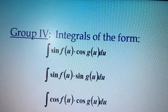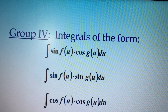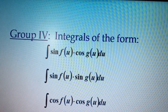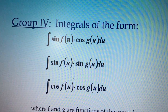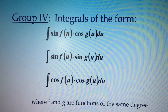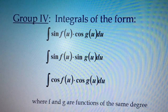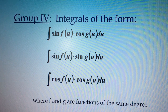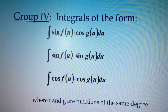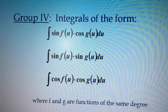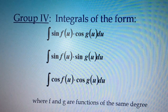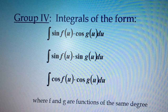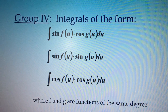So where f and g are functions of u, and specifically functions of the same degree — that's the difference from our previous examples. We did solve some examples before with combinations of sine and cosine, but this time for Group 4, this is very specific: the degree of f and g should be the same.